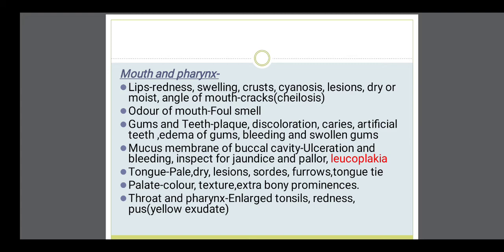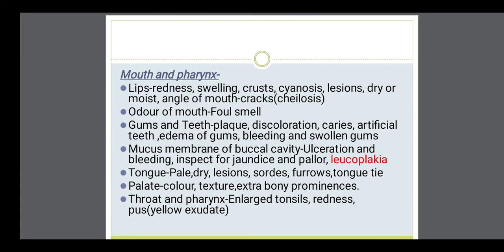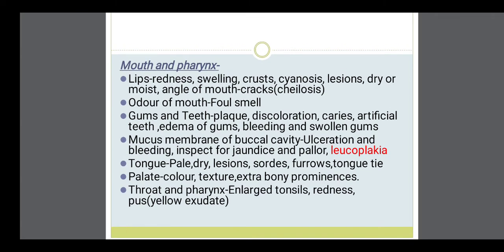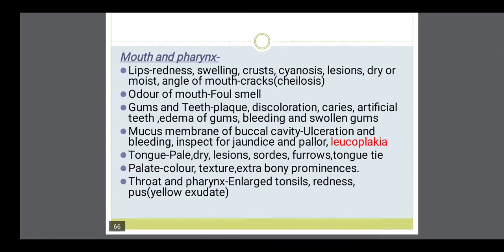Then the mucous membrane of the buccal cavity — examine for ulceration, any bleeding, and color of the mucous membrane. Inspect the buccal mucosa for jaundice and pallor — if very pale, it indicates anemia. Then leukoplakia — a condition related to cancer. Then the condition of the tongue: whether pale, dry, any lesions, sores, furrows, or tongue tie present or not. Then the palate — hard palate and soft palate: see the color, texture, and whether extra bony prominences are there. Throat and pharynx: large tonsils, redness, and pus present or not. To examine the mouth and pharynx, we can use a tongue depressor and pharyngeal retractor.